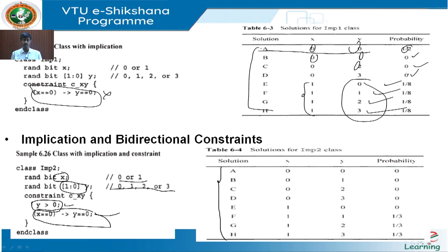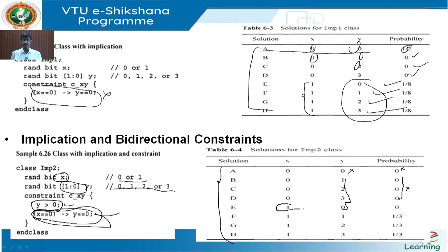I am taking eight solution probabilities. The first one is zero-zero: as y is greater than zero it fails, so the probability will be zero. Zero-one, zero-two, zero-three, and one-zero will not be implied, so they also fail the second constraint, making their probability zero. In the case where x equals one but y equals zero, it is also not appearing.